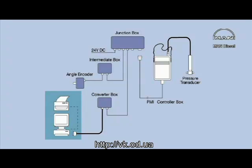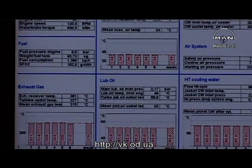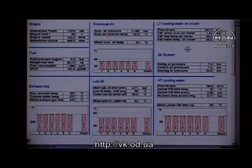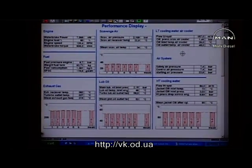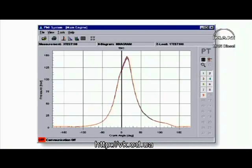The PMI system is designed to produce reliable calculation of mean indicated cylinder pressure and other performance data that require the accurate pressure measurement of cylinder pressures and detection of the crankshaft position.